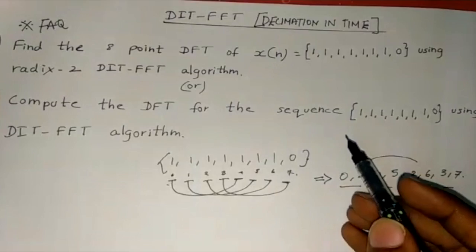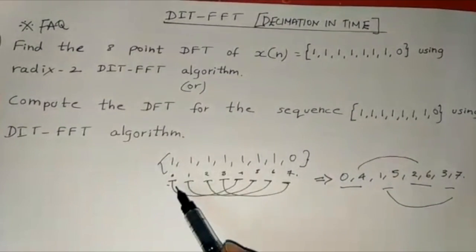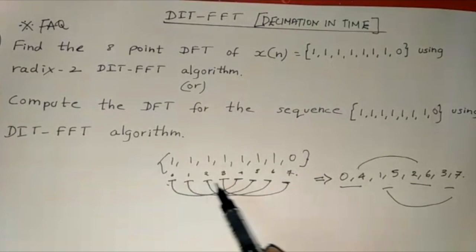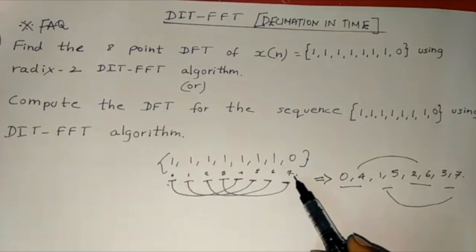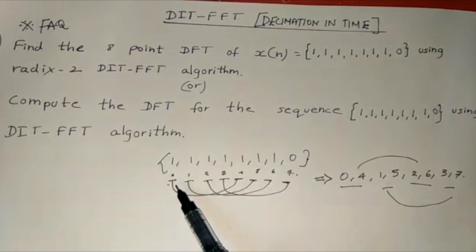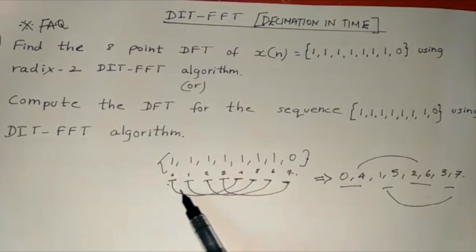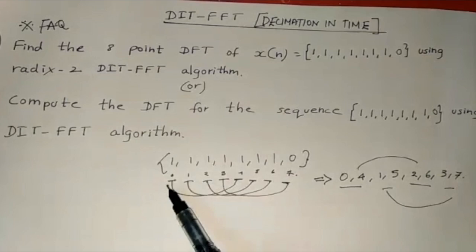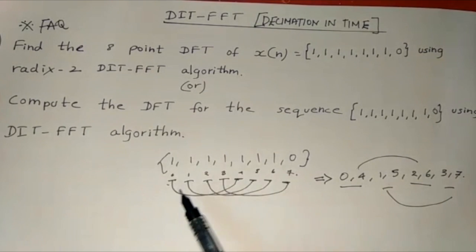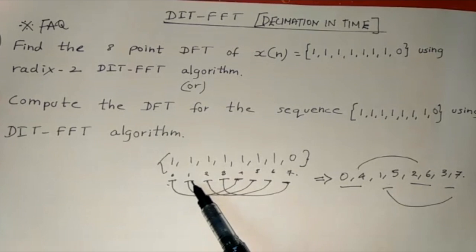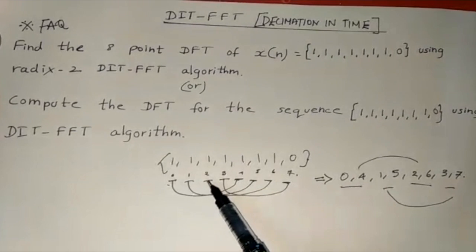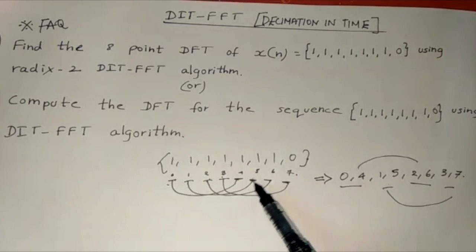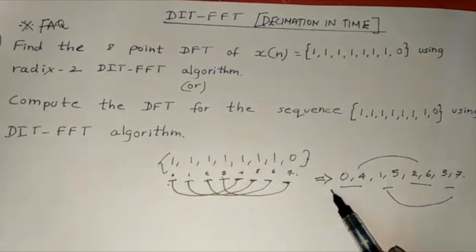Now write the given sequence separately and number them as 0, 1, 2, 3, 4, 5, 6, and 7. Now pair two numbers. From 0, leave three spaces and go to the next number after three spaces. Connect 0 to 4. Apply the same condition to 1: leave three spaces and connect 1 to 5. Do the same for all numbers and write the connected numbers separately.